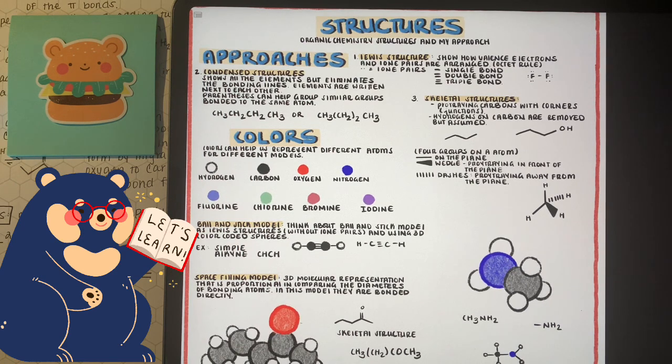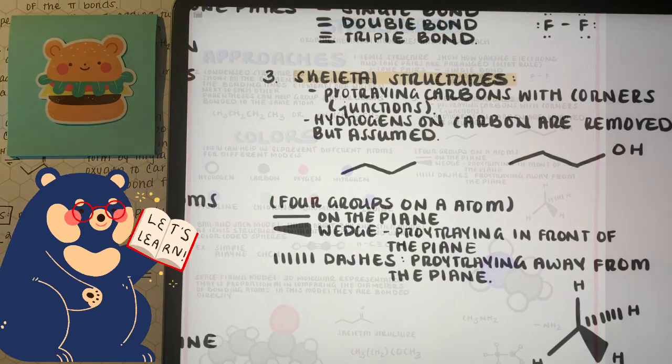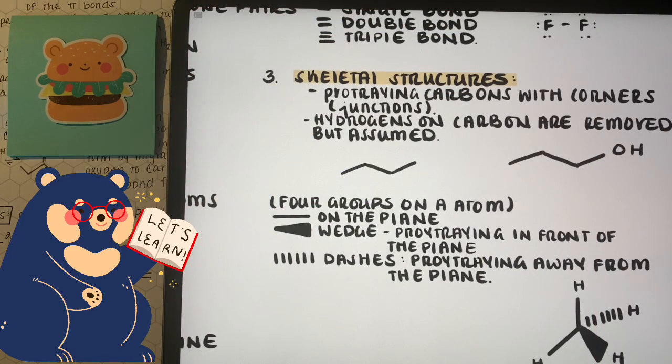They're kind of just writing everything out and grouping together similar groups that are bonded to the same atom. Now, one and two we've probably seen before in gen chem. Something that's new to us is probably approach three, the skeletal structure. This structure helps us eliminate the need to constantly be writing carbon, and instead helps us represent carbon through the corners, or junctions between lines. So on the left, we have one, two, three, four points, four corners, four carbons. On the right, we have one, two, three carbons, and the third carbon is connected to an OH group.